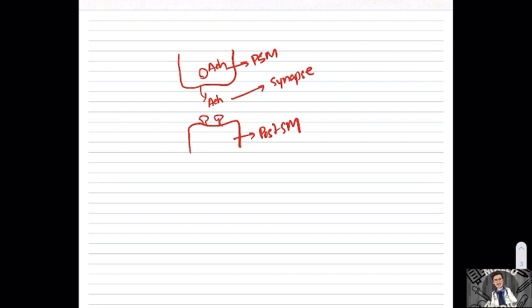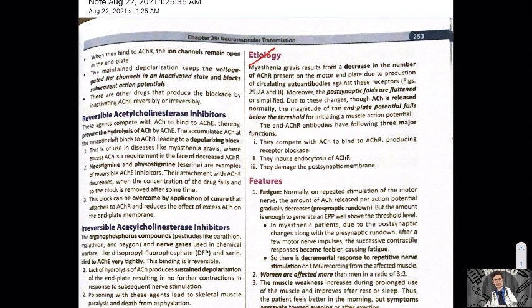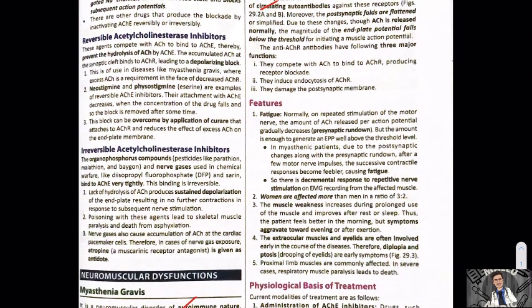Now in myasthenia gravis, these acetylcholine receptors are destroyed. There is a decrease in the number of acetylcholine receptors due to circulating autoantibodies. These autoantibodies compete with acetylcholine to attach to the acetylcholine receptors — so there is competitive inhibition. They also induce endocytosis of the acetylcholine receptors and damage the postsynaptic membrane.